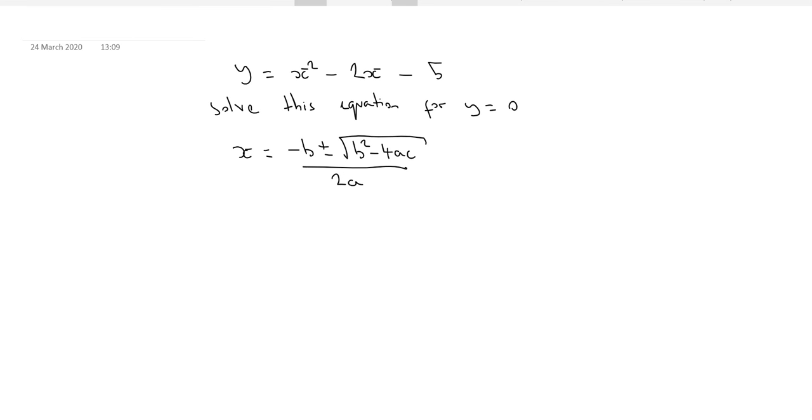Such that in this case, a is the coefficient of the x squared term, b is the coefficient of the x term, and c is equal to your constant, which would be minus 5.